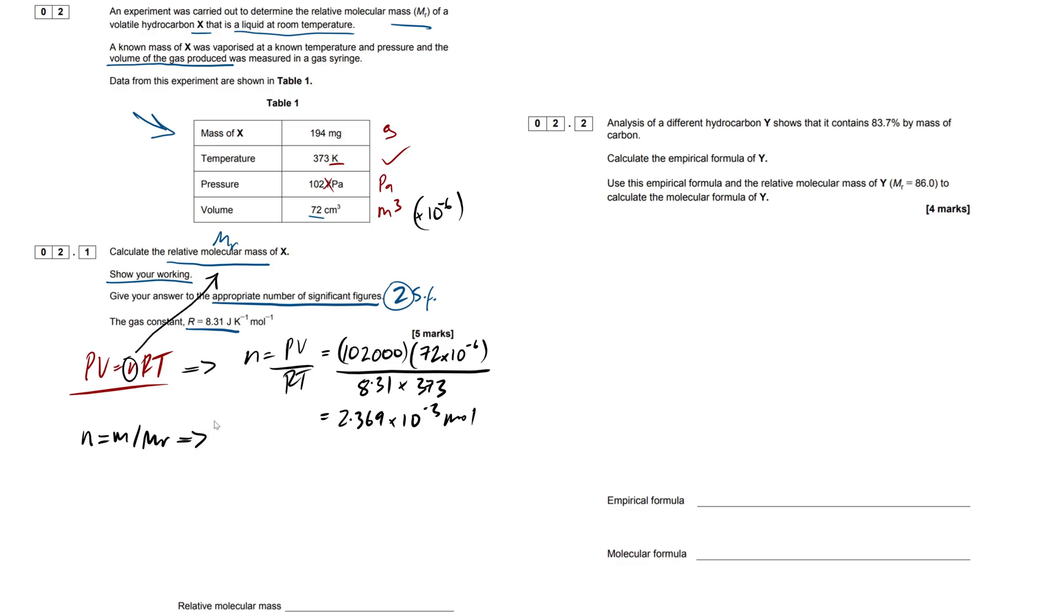So what we're going to do, because we want our mr, we're going to rearrange this, so then mr is the subject, our mr of x equals, this is now going to be mass over moles. All right, so what I'm going to do now is convert the masses. Remember, we have to show our working, so I'm just going to say that 194 milligrams equals 0.194 grams. We've divided it by 1,000. So therefore, our mass, 0.194 divided by our moles, 2.369 times 10 to the minus 3, and we'll throw that in brackets, and that gives us an answer of 81.89 grams per mole, so units of mr.